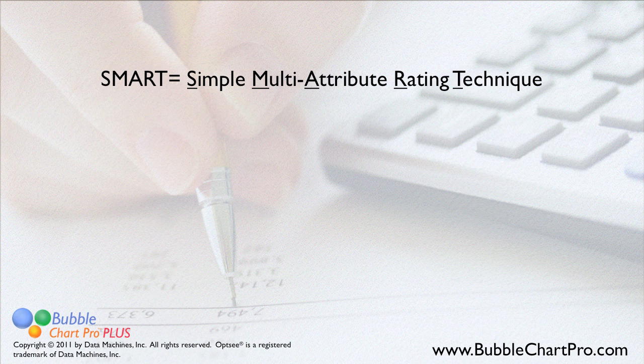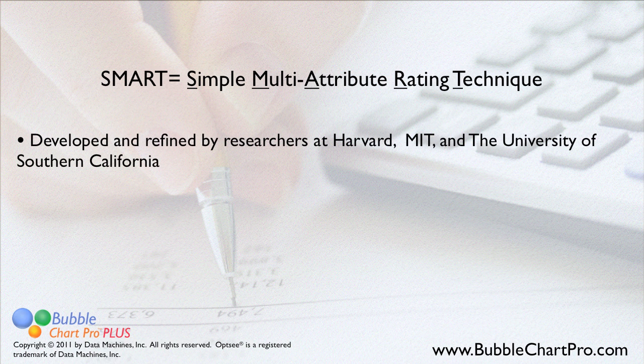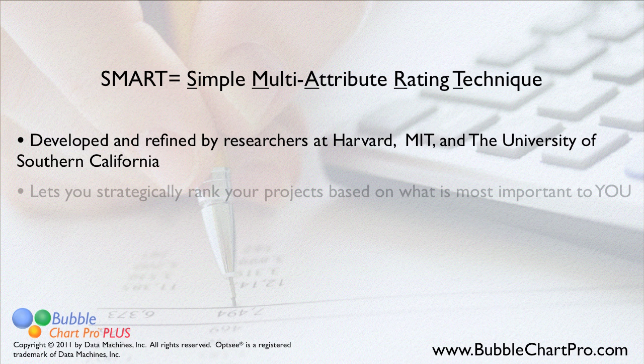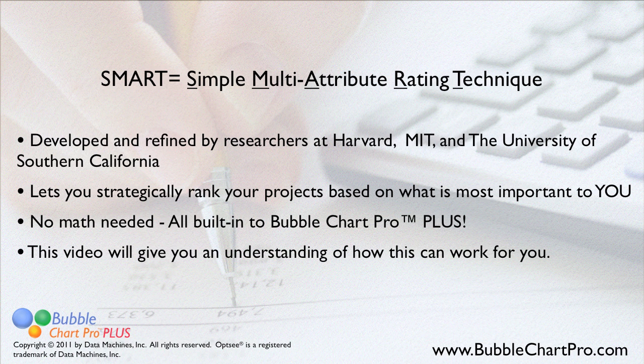As I mentioned, BubbleChart Pro Plus uses the SMART methodology to rank your projects. SMART stands for Simple Multi-Attribute Rating Technique. The SMART system was developed and refined by researchers from Harvard, MIT, and the University of Southern California. The SMART system lets you strategically rank your projects based on what's important to you. All the mathematics used in the ranking system are built into BubbleChart Pro, so you don't need to do any math. This video will give you a basic understanding of how the system works, so you'll be able to see the underlying logic and robustness of the SMART methodology.